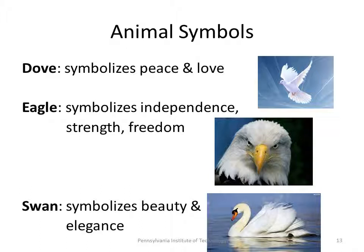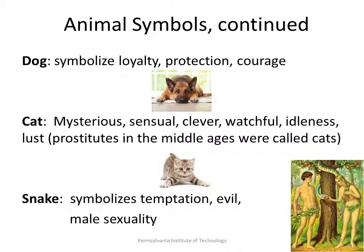Animal symbols are very popular. The dove symbolizes peace and love. The eagle symbolizes independence, strength, and freedom, and when we look at an eagle, it represents in large part who we are as Americans — another very complex symbol boiled down to a five-letter word. Swans symbolize beauty and elegance, as in the ugly duckling turning into the beautiful swan. The dog symbolizes loyalty, protection, and courage. Cats are symbolic of mystery and sensuality — they're very clever, watchful, and idle, and often associated with lust, to the extent that in the Middle Ages, prostitutes were called cats.